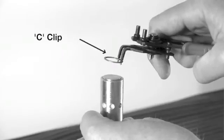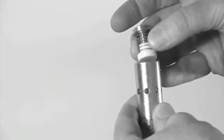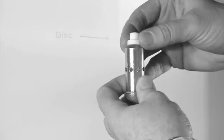To inspect the disc and seating area, take the C-clip from the bottom of the check valve. The internal parts of the valve include a brass plug, spring, and the disc.